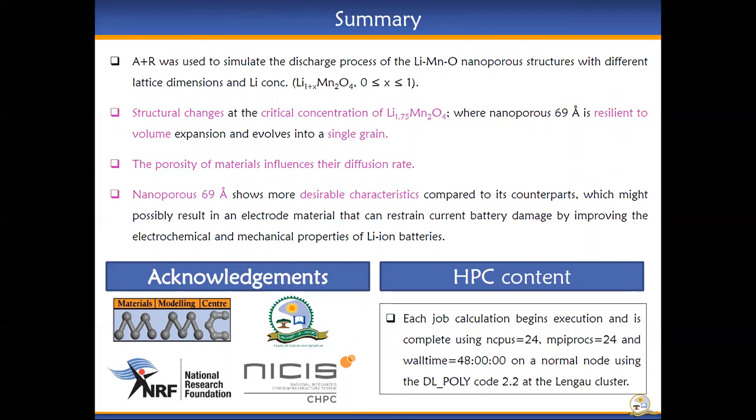The porosity of materials was found to influence their diffusion rate. Nanoporous 69 shows more desirable characteristics compared to its counterparts, which might possibly result in an electrode material that can restrain current battery damage by improving the electrochemical and mechanical properties of lithium-ion batteries.